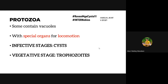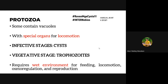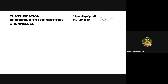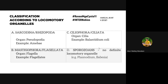Most protozoa require a wet environment for feeding, locomotion, osmoregulation, and reproduction. Trophozoites undergo binary fission for asexual reproduction. They are typically recovered from liquid or watery stool because they prefer that wet environment. Protozoa are classified according to their locomotory organelles: Sarcodina/Rhizopoda use pseudopodia (false feet — cytoplasmic extensions) for locomotion, and this group contains your amoeba.